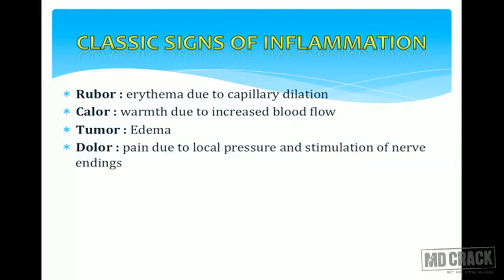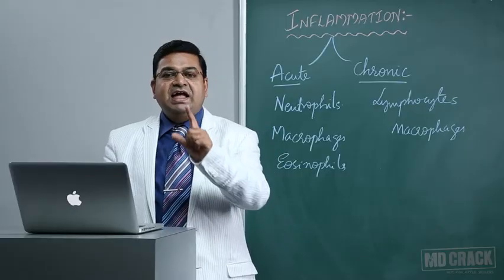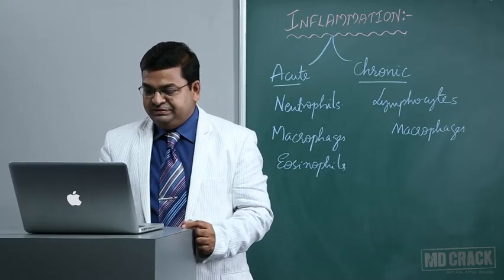Dolor — pain — is the sign that brings the patient to the clinic, so it is the most important cardinal sign. It is pain due to local pressure as well as stimulation of nerve endings; bradykinin is the important chemical mediator that causes the pain. The affected area will also show alteration in function, sometimes even total loss of function — Functio laesa. These are the cardinal signs of inflammation.